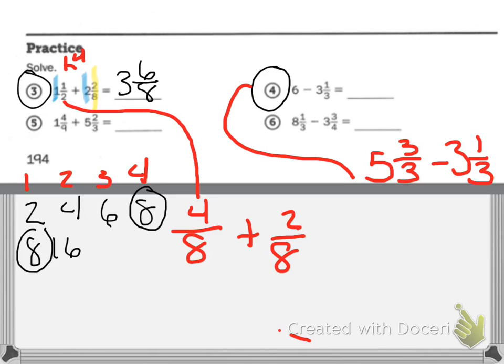So now, my first step is to subtract the whole numbers. Five minus three is two. And then three minus one is two. And I carry over my denominator.